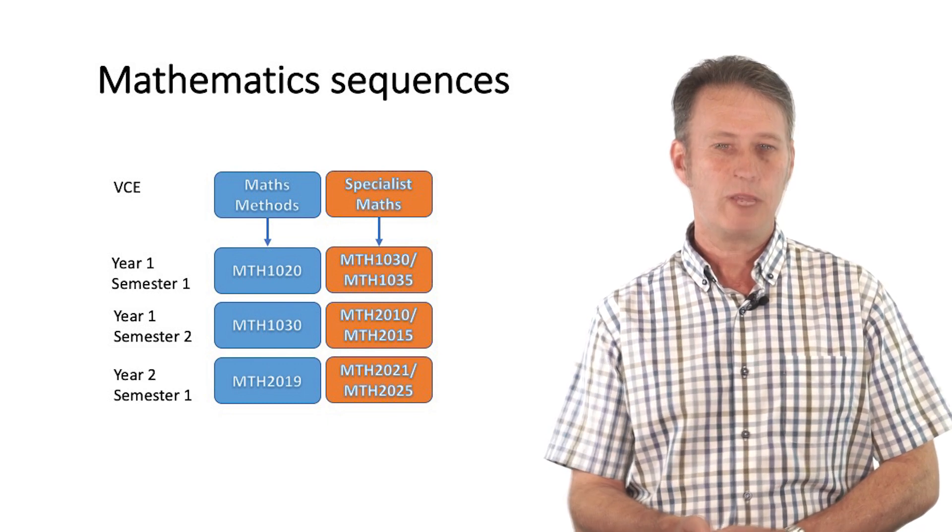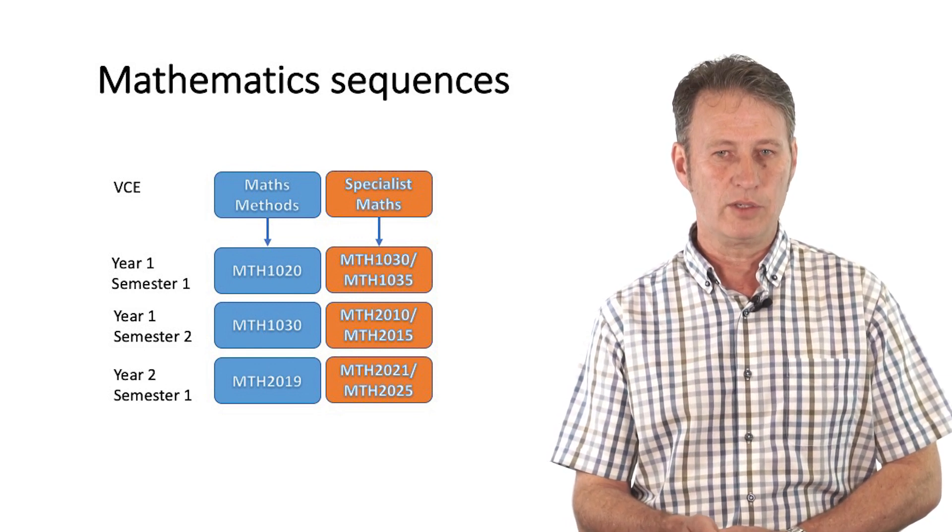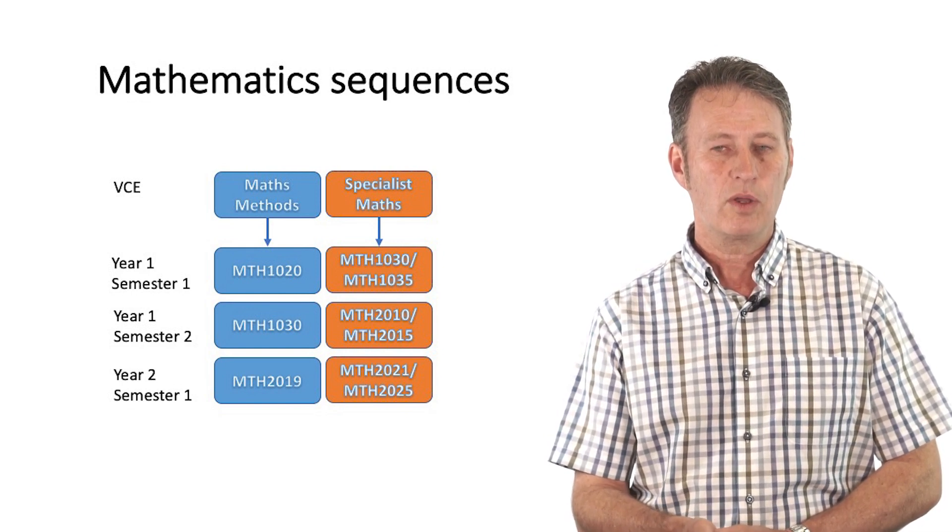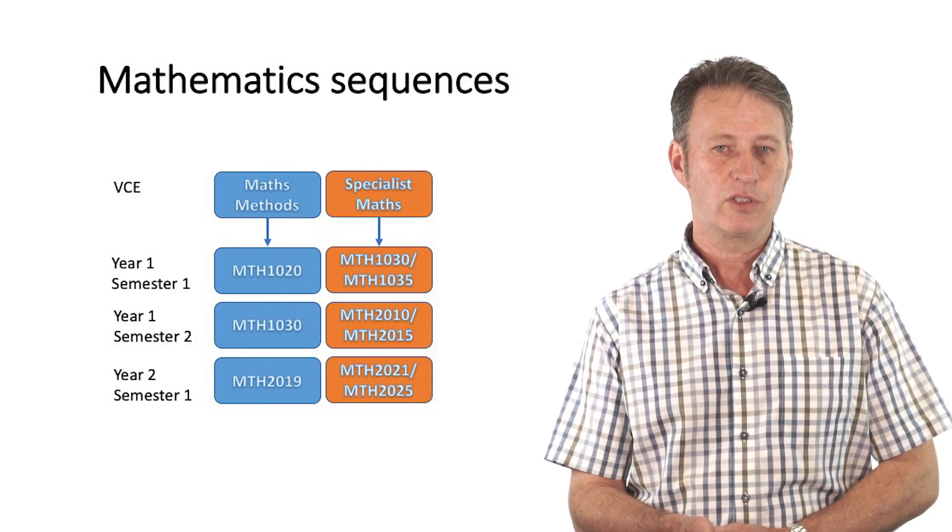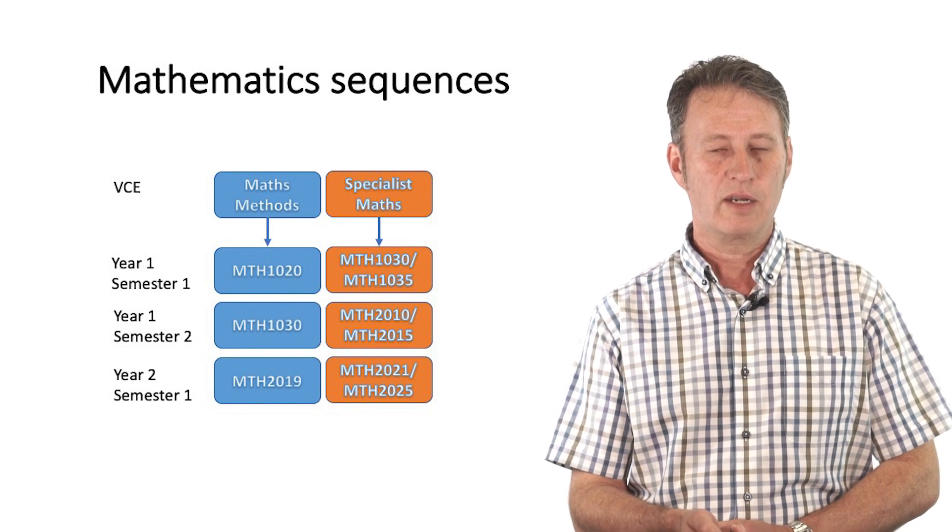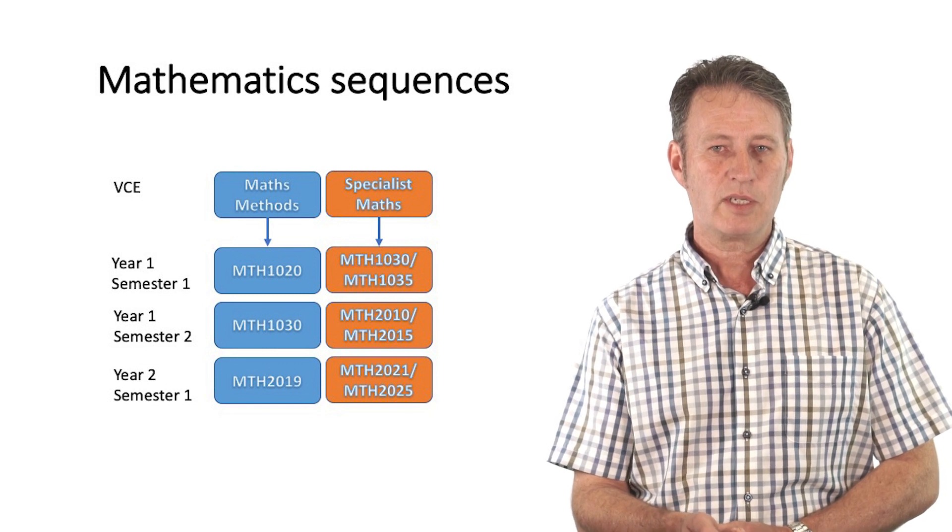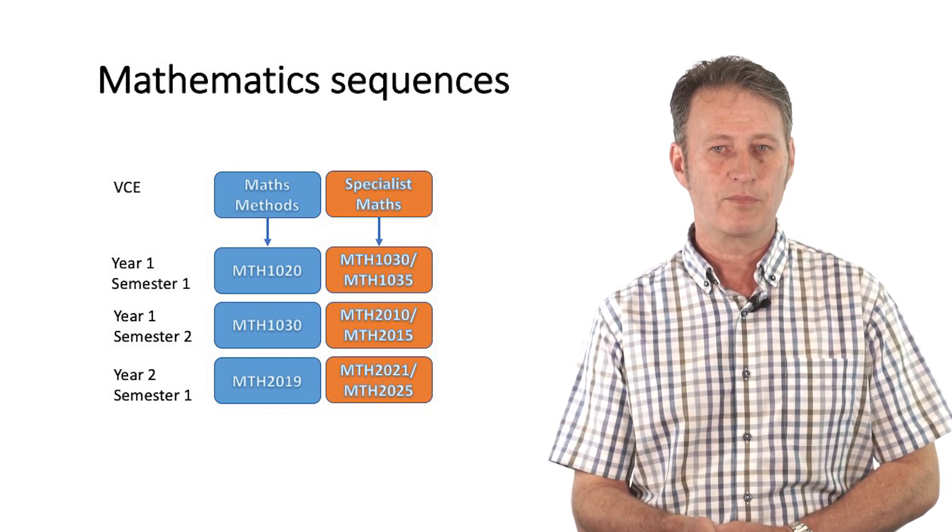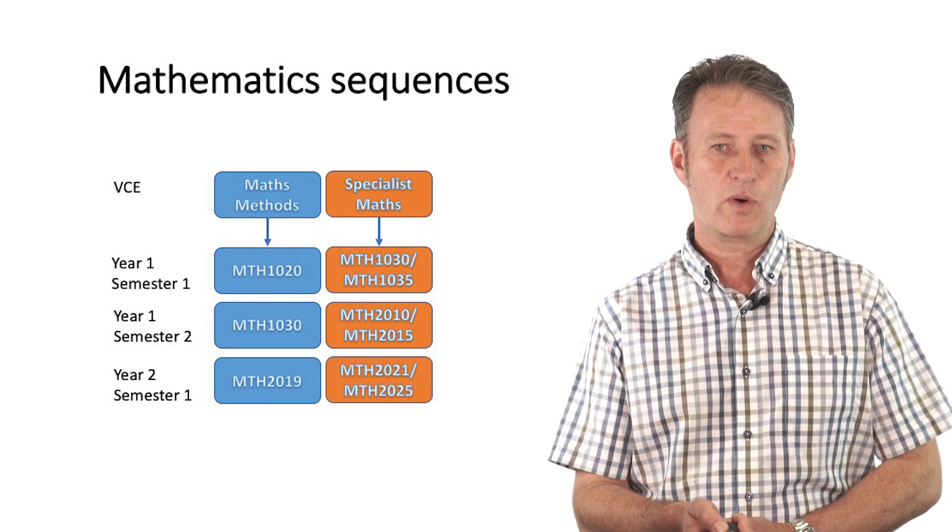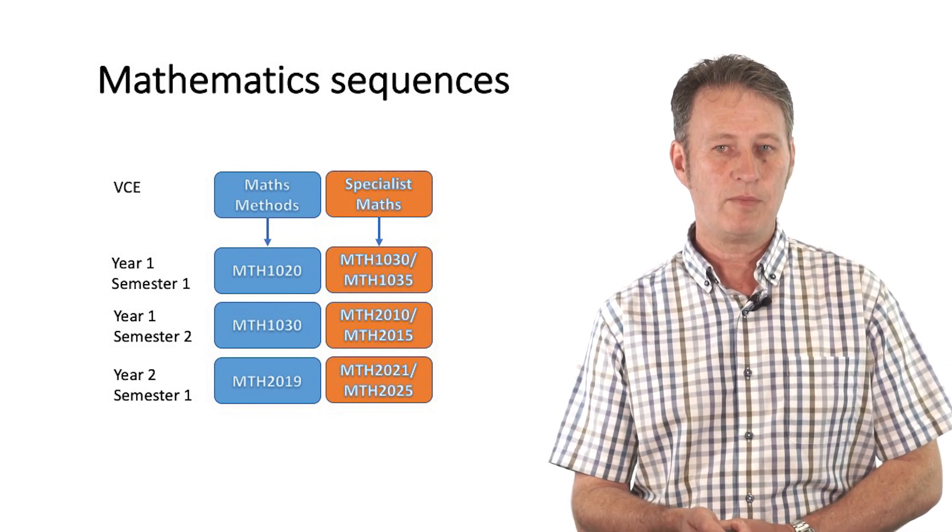If you passed VCE Specialist Maths 3-4, or equivalent, then you take the sequence highlighted in orange. The first unit that you should take is MTH 1030, or if you did very well, you can enrol in the advanced version, MTH 1035. Then in your second semester, you take an advanced calculus unit, MTH 2010. Again you could possibly take the more advanced version, MTH 2015. In your first semester of second year, you will then take MTH 2021, Linear Algebra with Applications, or its advanced version, MTH 2025.